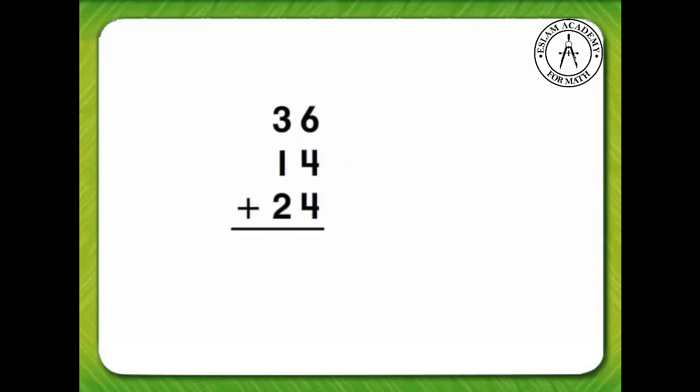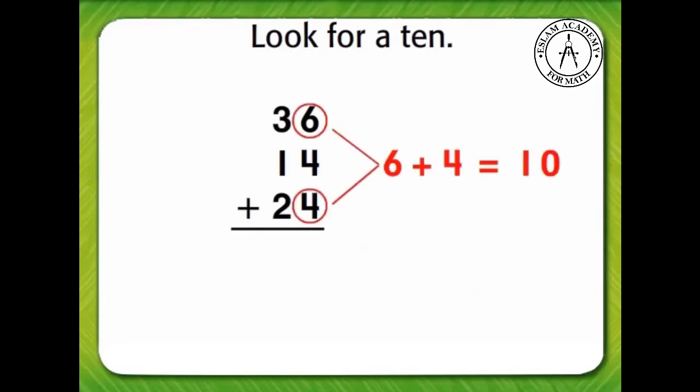One way is to look for two addends that are equal to ten. Six plus four is equal to ten. And ten plus four is equal to fourteen. Fourteen is four ones and one ten. One plus three plus one plus two equals seven. The children have 74 tokens.